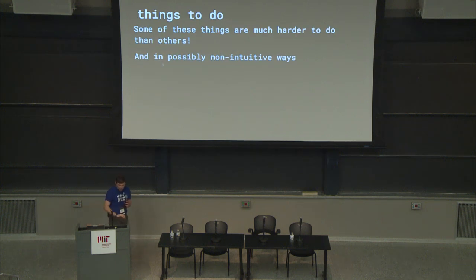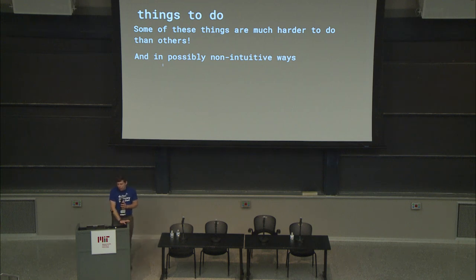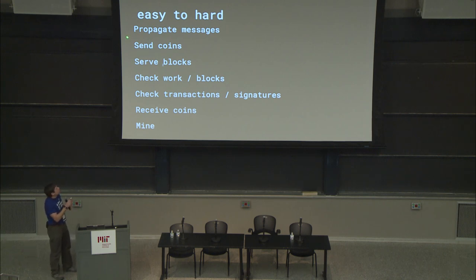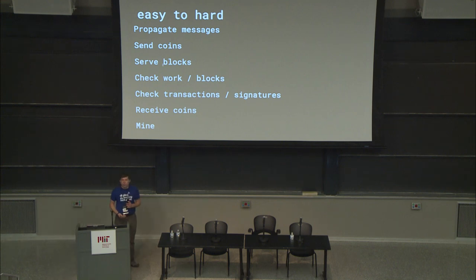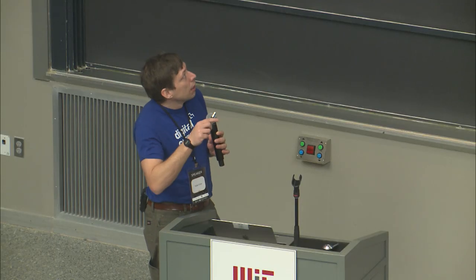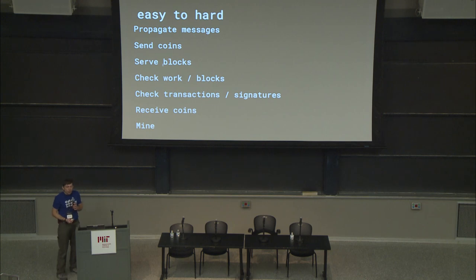I'm going to list the things to do in Bitcoin. This is not necessarily exhaustive, but it's a pretty good breakdown of what there is to do and how hard or easy these things are. You can propagate messages — that's the basic communication layer. You can send coins, which is one of the main things you want to do. You can serve blocks.